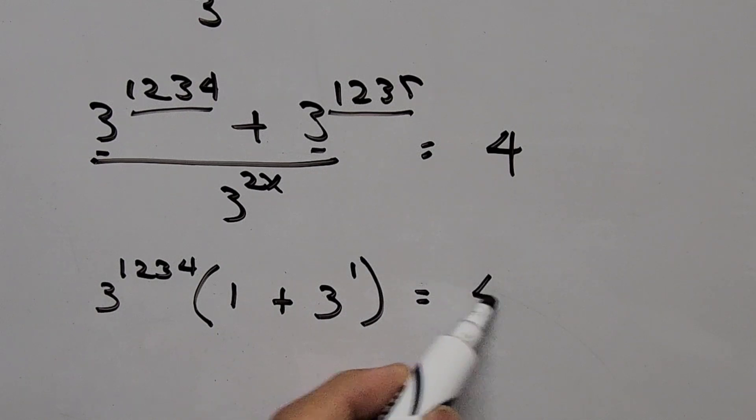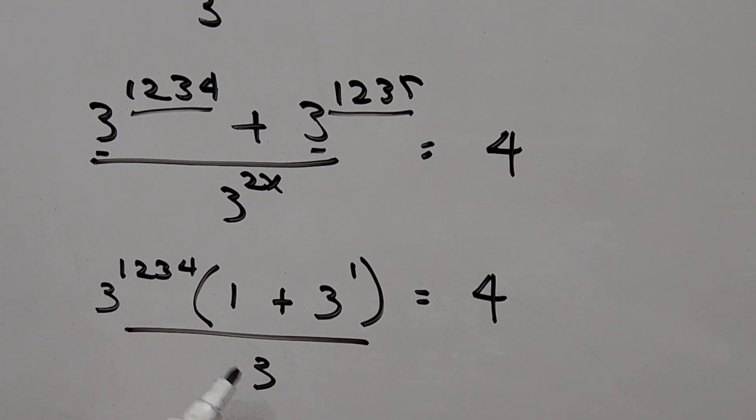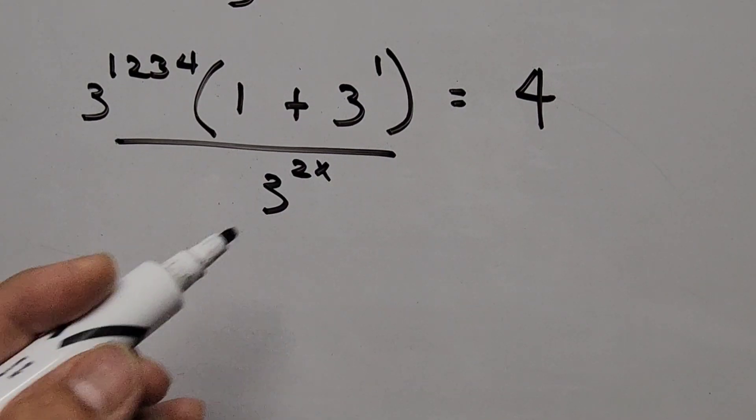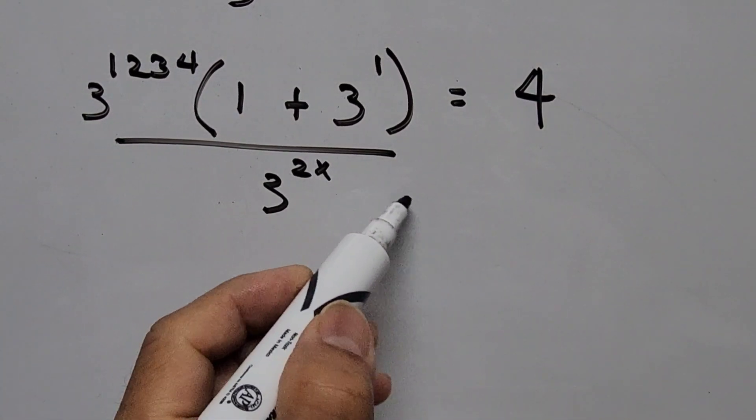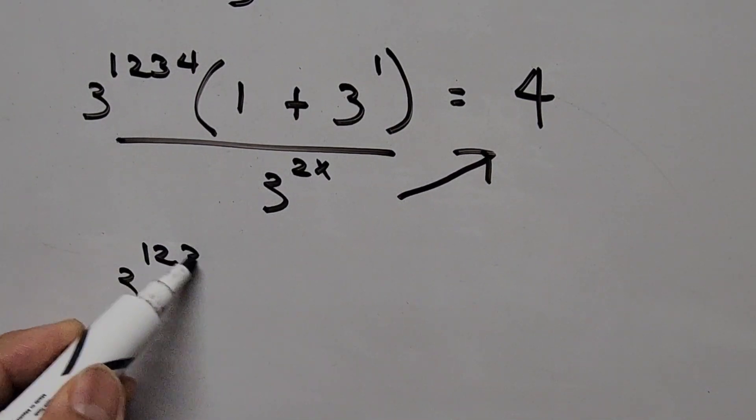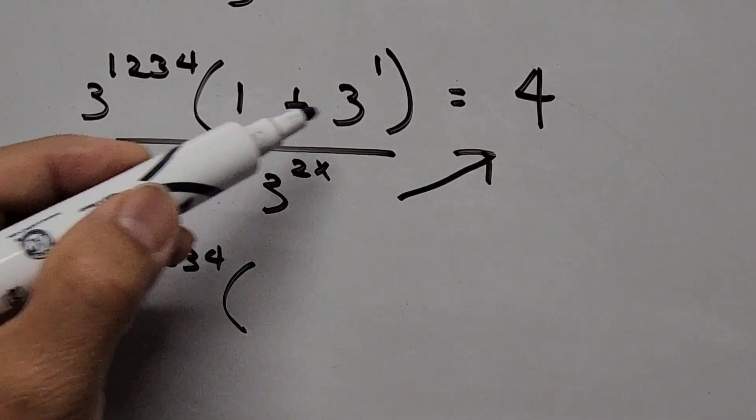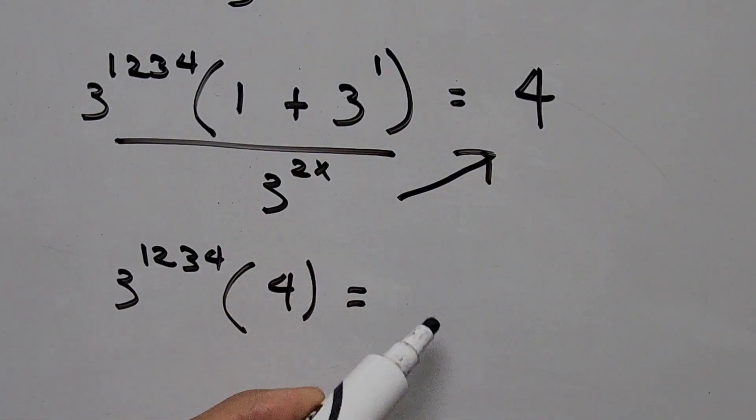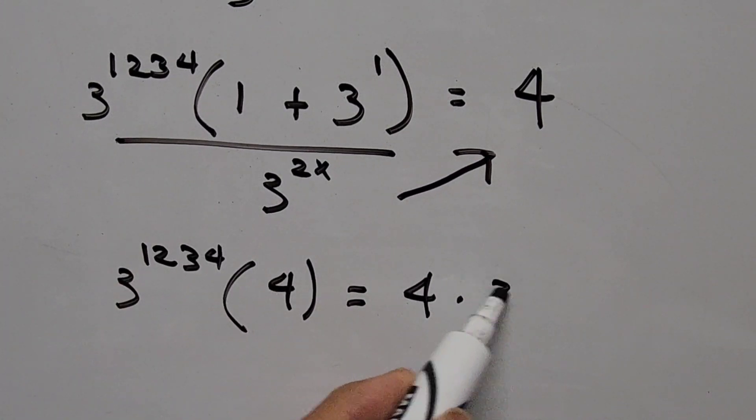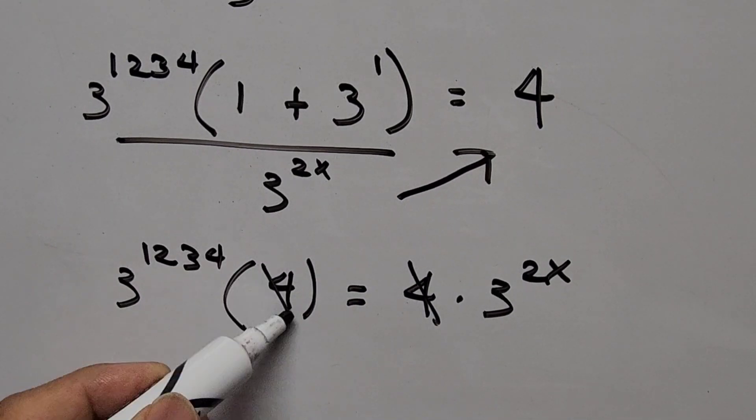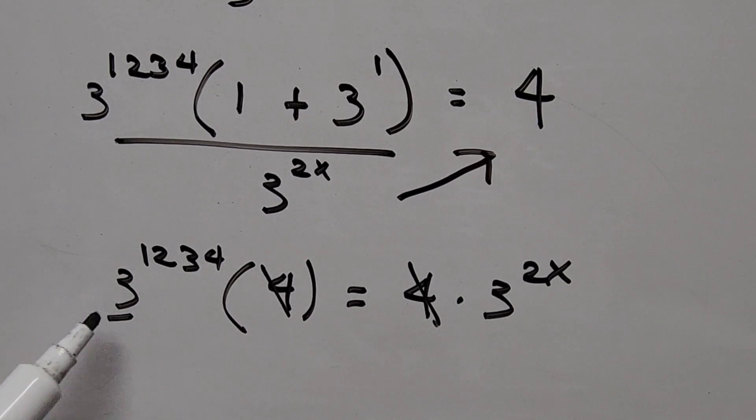And this is equal to 4 divided by 3 to the power of 1234 times the quantity 1 plus 3 to the first power, that is 3 plus 1, so that's 4. 4 equals 4 times 3 to the power of 1234 equals 4 times 3 to the power of 2x. And from here we can cancel the 4 now. And what we have left is 3 to the power of 1234 and 3 to the power of 2x.